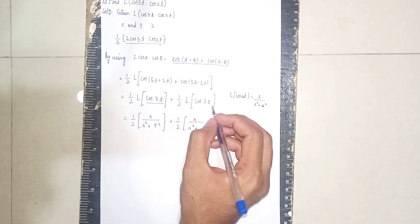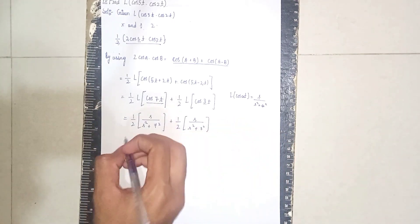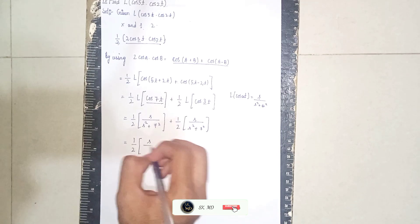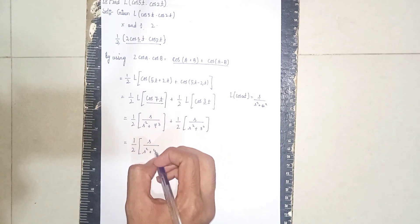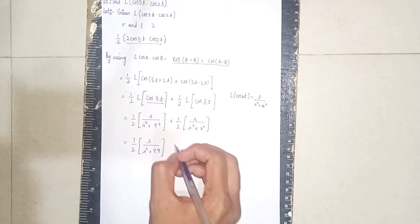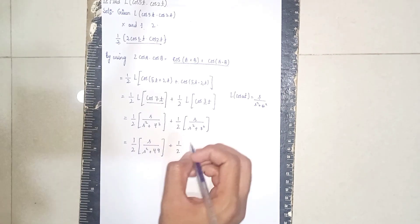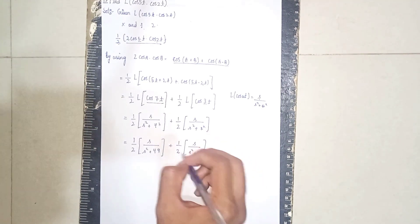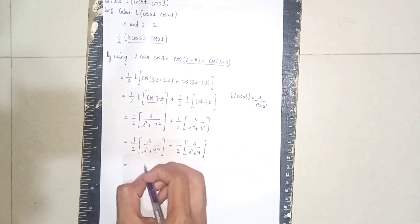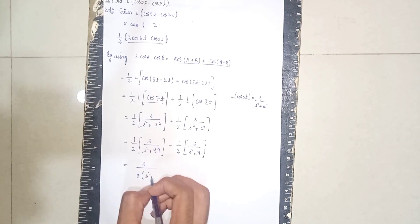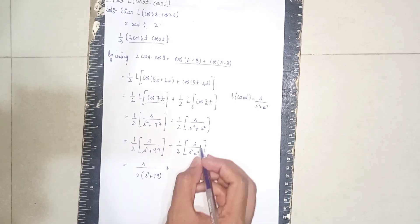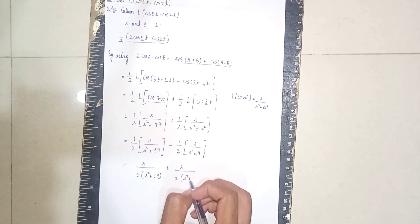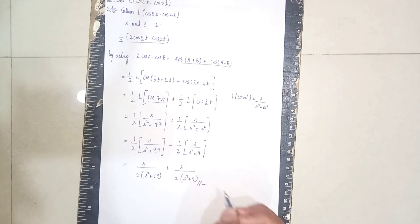So it becomes: one-half times s / (s² + 7²) — which is 49 — close the bracket, then plus one-half open the bracket s / (s² + 3²), which is 9. Simplifying by sending the 2 into the denominator: s / [2(s² + 49)] + s / [2(s² + 9)]. This is our final answer. Thanks for watching.